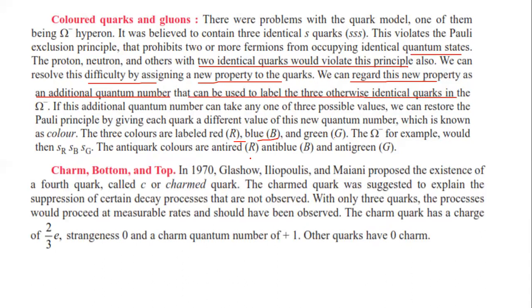The charm, bottom, and top quarks. In 1970, Glashow, Iliopoulos, and Maiani proposed the existence of a fourth quark called the charm quark. The charm quark was suggested to explain the suppression of certain decay processes that are not observed. With only three quarks, the process would proceed at measurable rates and should have been observed. The charm quark has a charge of plus two by three, strangeness zero, and charm quantum number of plus one. Other quarks have zero charm.